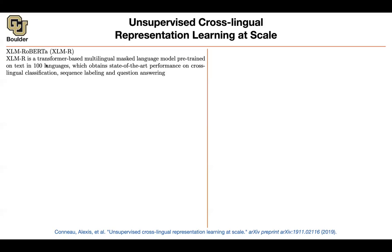We know that it's going to be transformer-based, because RoBERTa is transformer-based. It's going to be multilingual. We know that RoBERTa is a masked language model. The impressive part is that it is pre-trained on text in 100 languages — that's the scale. And why do you want to do that? Because you're going to have cross-lingual classification, sequence labeling like named entity recognition, or question answering.